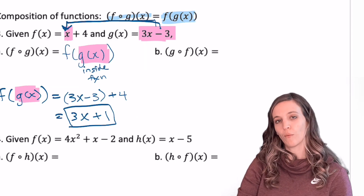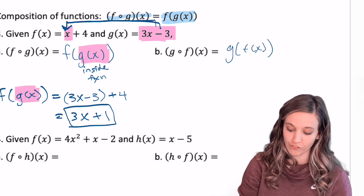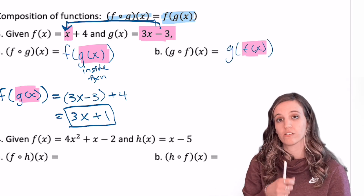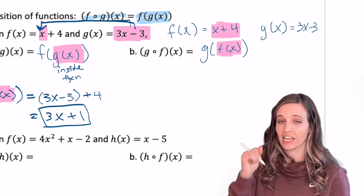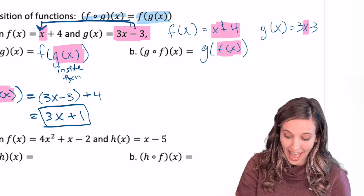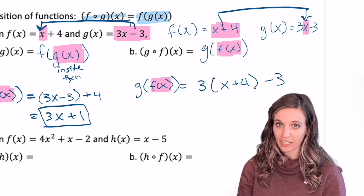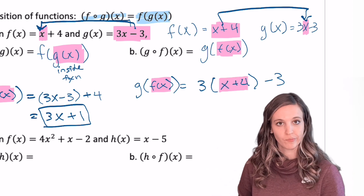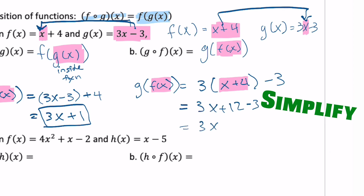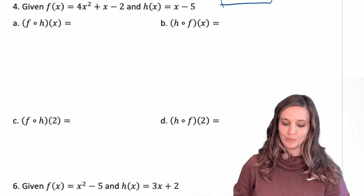For part b, g of f of x: f of x is the input function, so x plus 4 gets input into g where x is. That gives 3 times the quantity x plus 4, minus 3. Simplifying, g of f of x equals 3x plus 9.